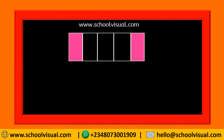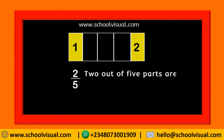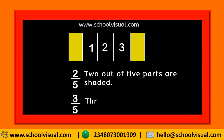The first thing is to find the total number of parts: one, two, three, four, five — so five total parts. How many parts are shaded? One, two — two out of five parts are shaded. Now tell me how many parts are not shaded? One, two, three — so three out of five parts are not shaded.